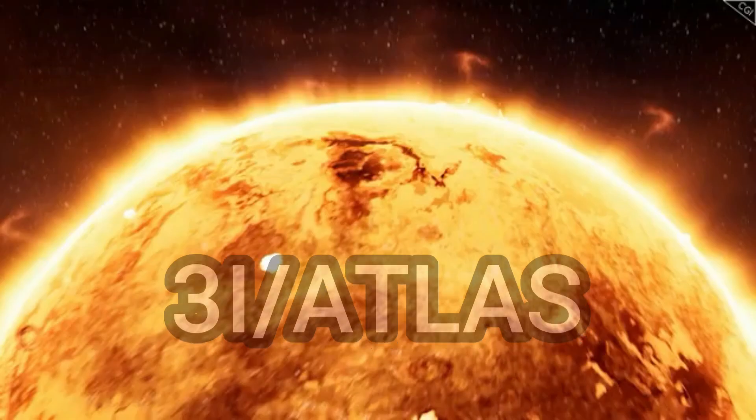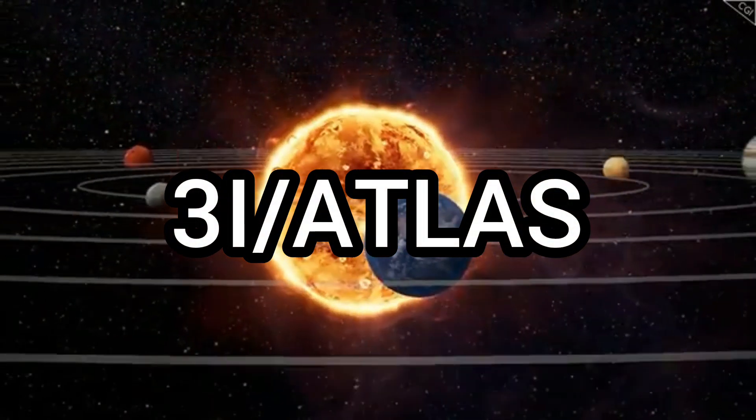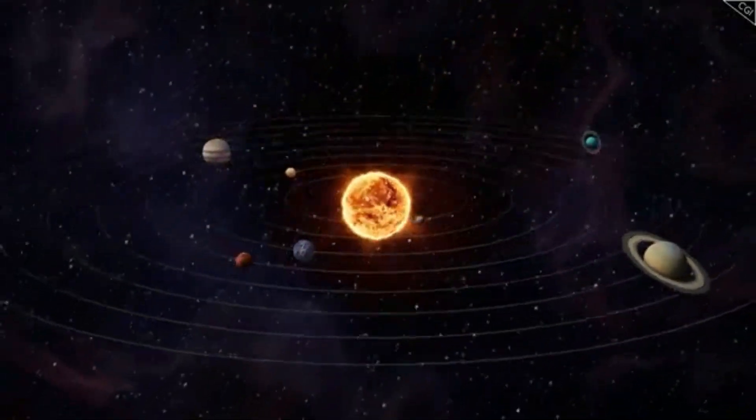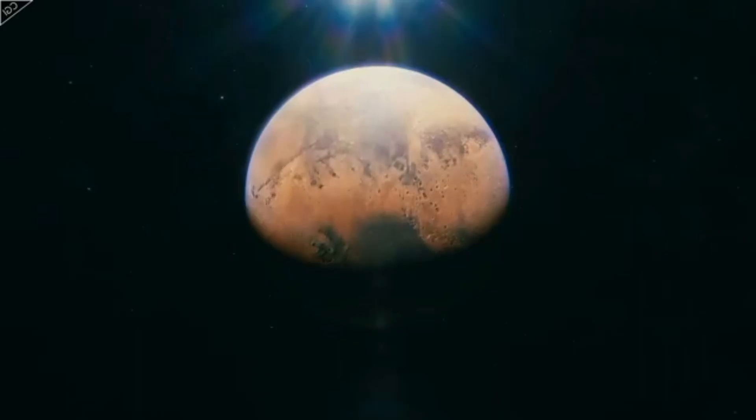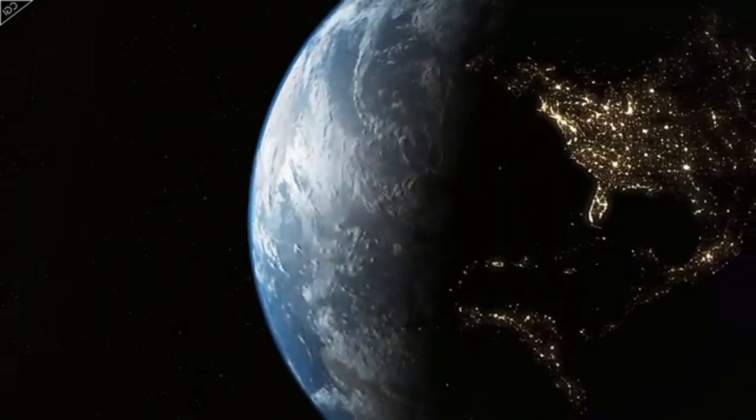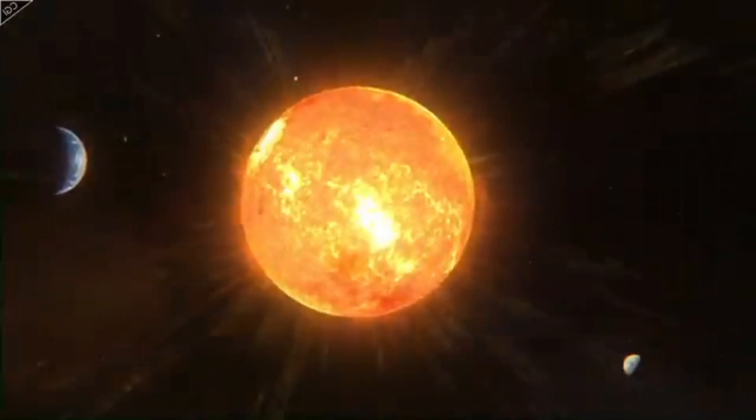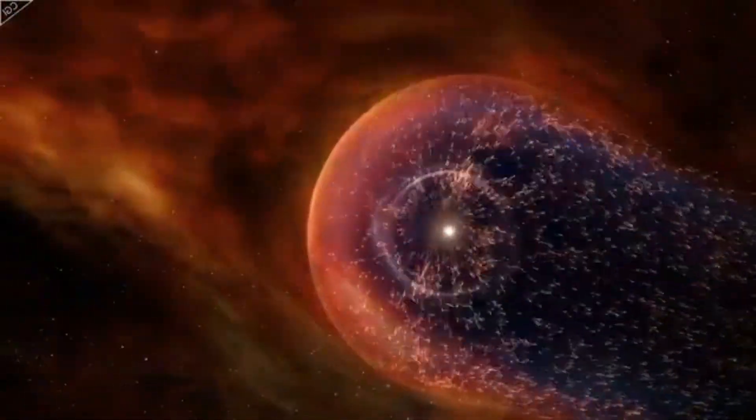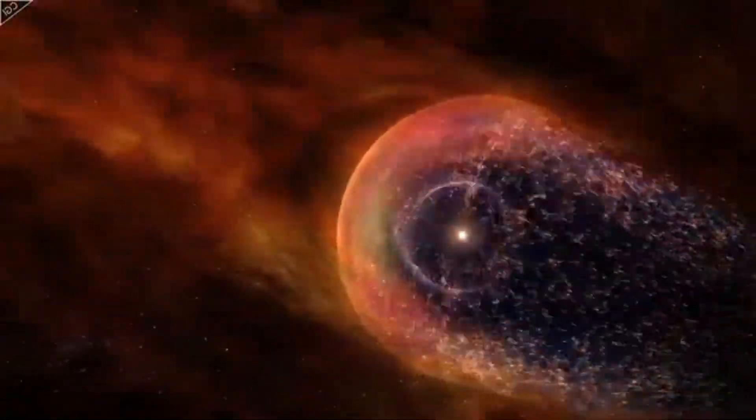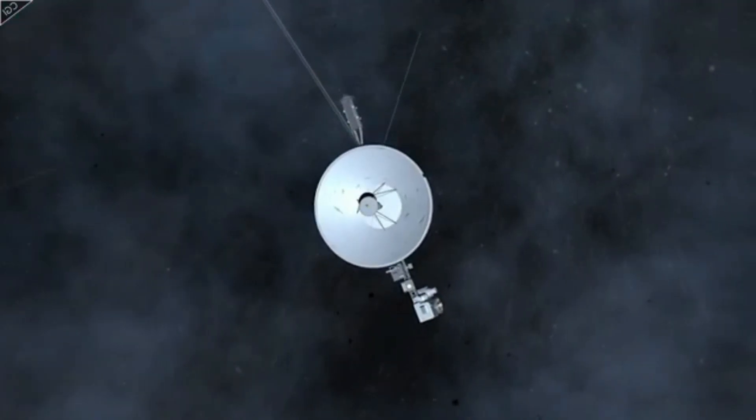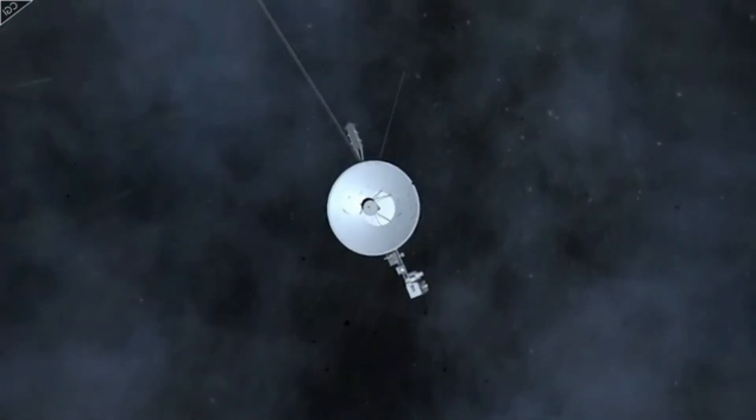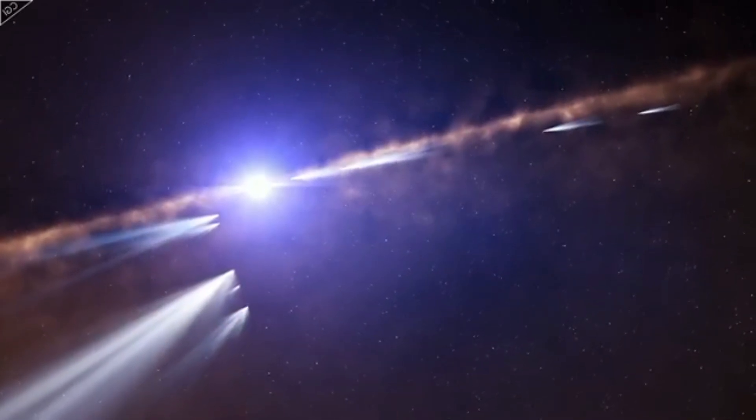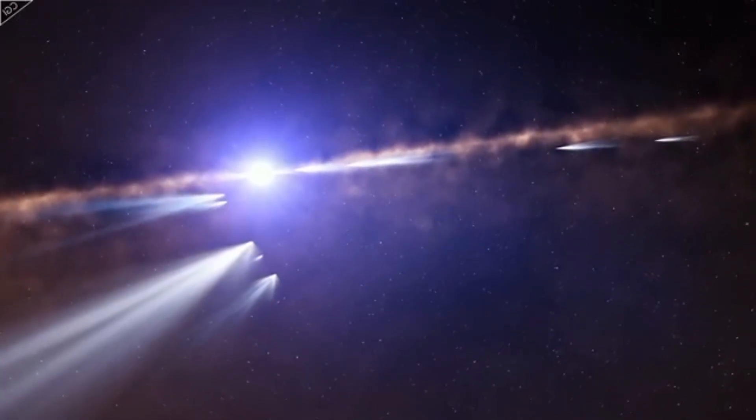Its name? 3I Atlas, the third confirmed interstellar object ever discovered. And unlike anything we've seen before, it's enormous, icy, strangely aligned, and maybe it's watching us. Could this be nature's message in a bottle, a fragment from another star system, or is it something else entirely, something built? Today, we explore the mystery of 3I Atlas and why it might change everything we know about our place in the universe.